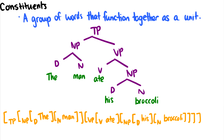Below, we'll see a nice bracketed version of the tree above. This has the same information as the tree, but it's just written in a linear order with brackets and subscripts. Very difficult to read — I don't think you'd ever actually have to parse one of these. Generally, we draw trees to make them easier for us to see. But this is the idea of a constituent.